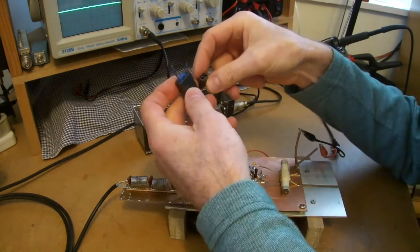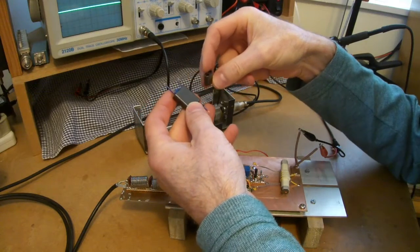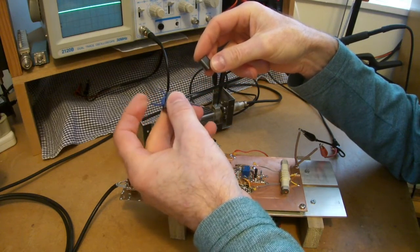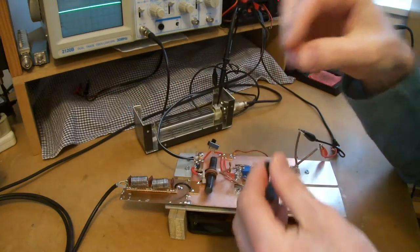And then on the input, I'll just use a slightly smaller binocular core transformer. So we'll do that and we'll do some comparisons. We'll be back shortly.